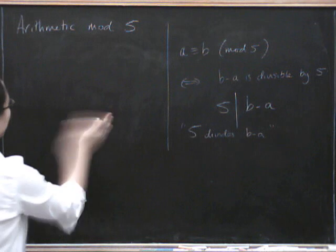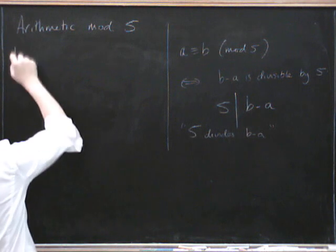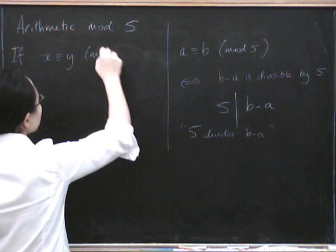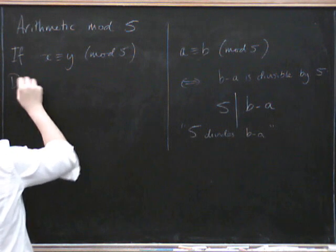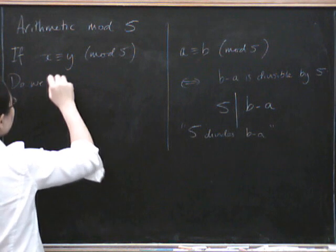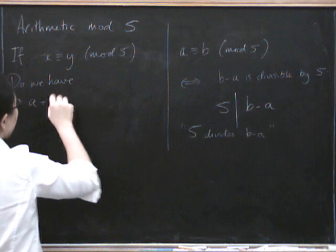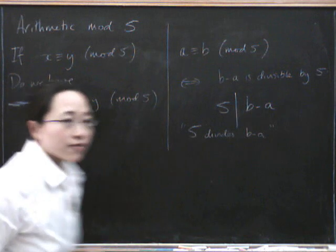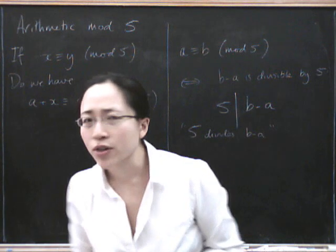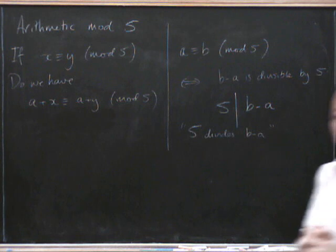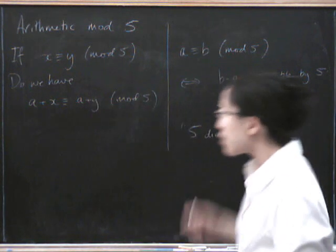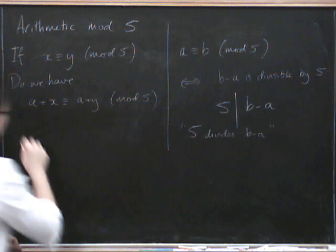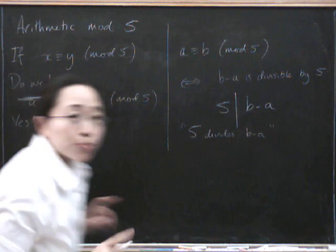So for example, if we have, if x is congruent to y mod 5, do we have a plus x is congruent to a plus y mod 5? Take a second to see if you can think about that. Have you thought about it? Well let's try using this definition. So what we have to show, so the answer I'll tell you now is yes. Let's prove it carefully.